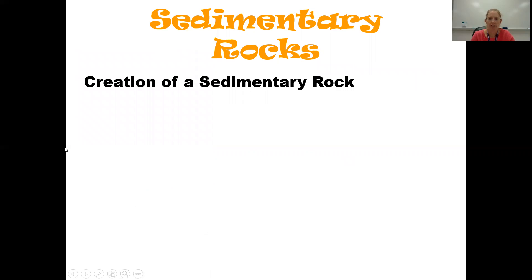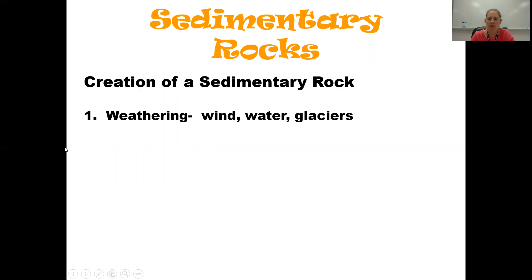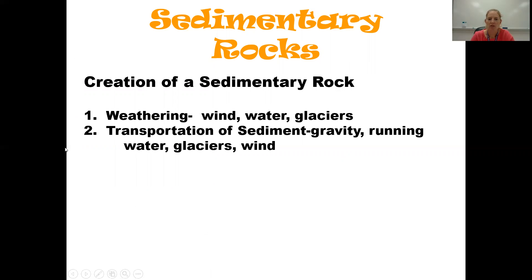Sedimentary rocks, as we know from talking about our rock cycle, involve a couple of steps. First, we need some sort of weathering and erosion to occur. Weathering from wind, water, and glaciers is going to break down some other kind of rock — maybe an igneous rock that crystallized from magma — and create sediment. That sediment then gets transported due to gravity, running water, a glacier, or wind carrying it somewhere else.